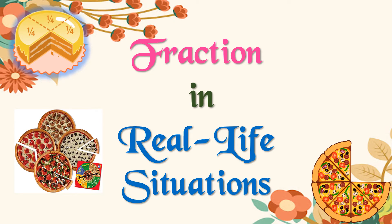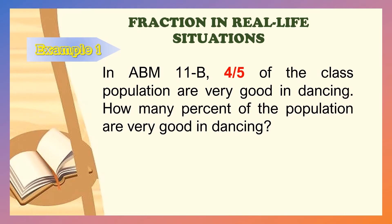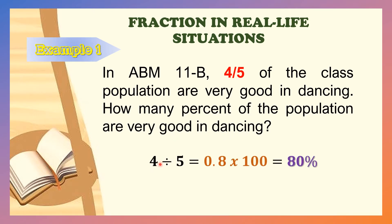To begin, let's discuss fractions in real-life situations. In ABM 11B, 4 over 5, or 4 fifths of the class population, are very good in dancing. So how many percent of the population are very good in dancing? The first step is to divide the numerator by its denominator. So we have 4 divided by 5, which is equal to 0.8.